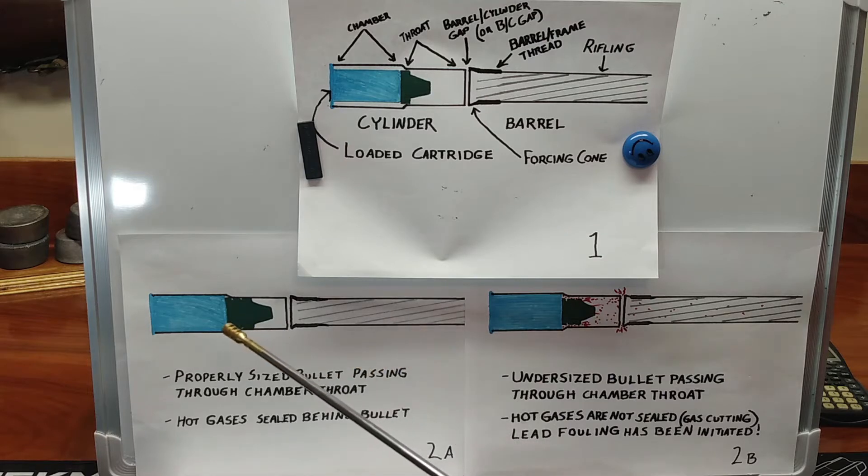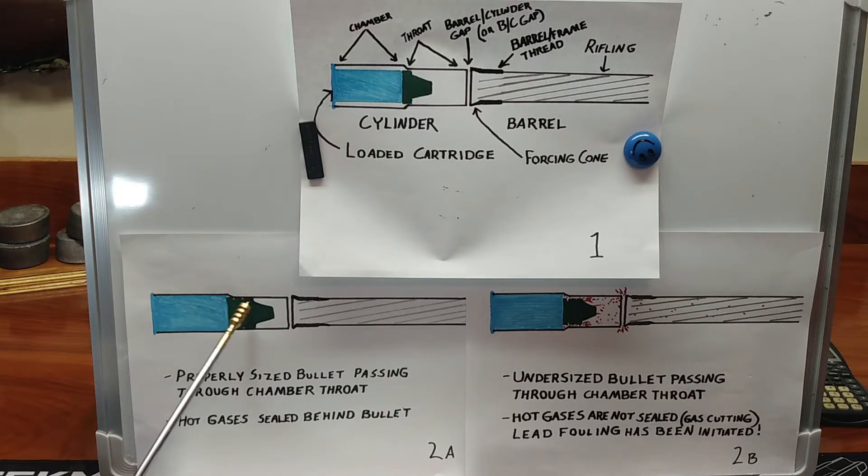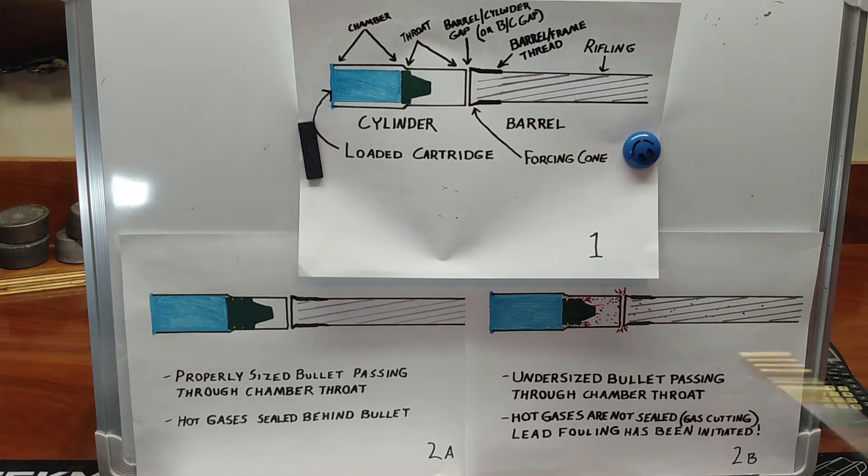This is basically showing the bullet leaving the case. It might not have even totally disengaged from the case yet, but it's certainly probably about 90% out. We notice right here the bullet, the sides are touching the throat just fine, making a nice seal, a nice fit. This is what we want to see, folks.